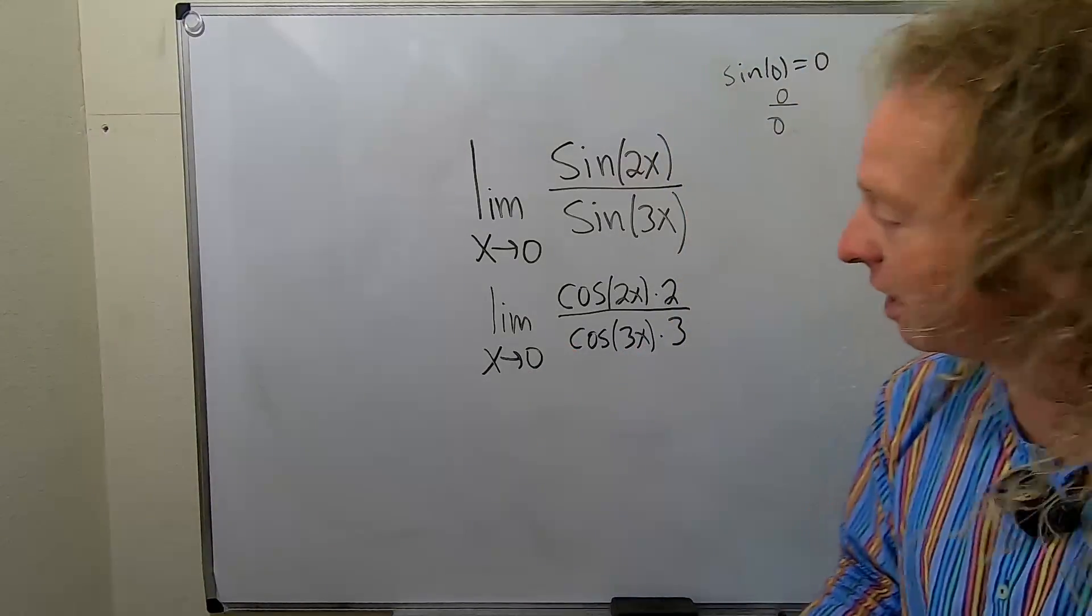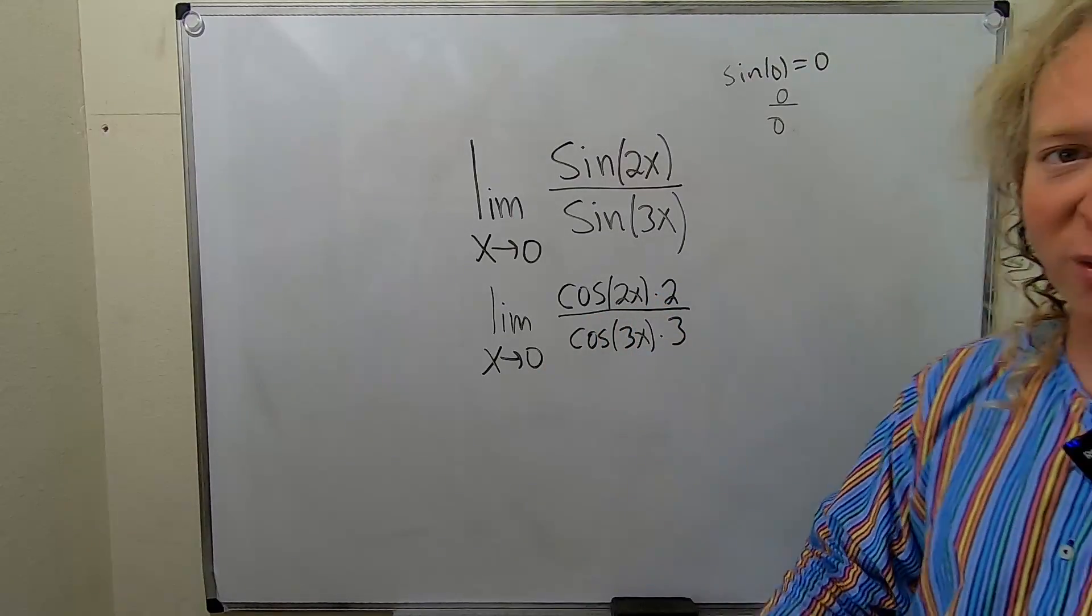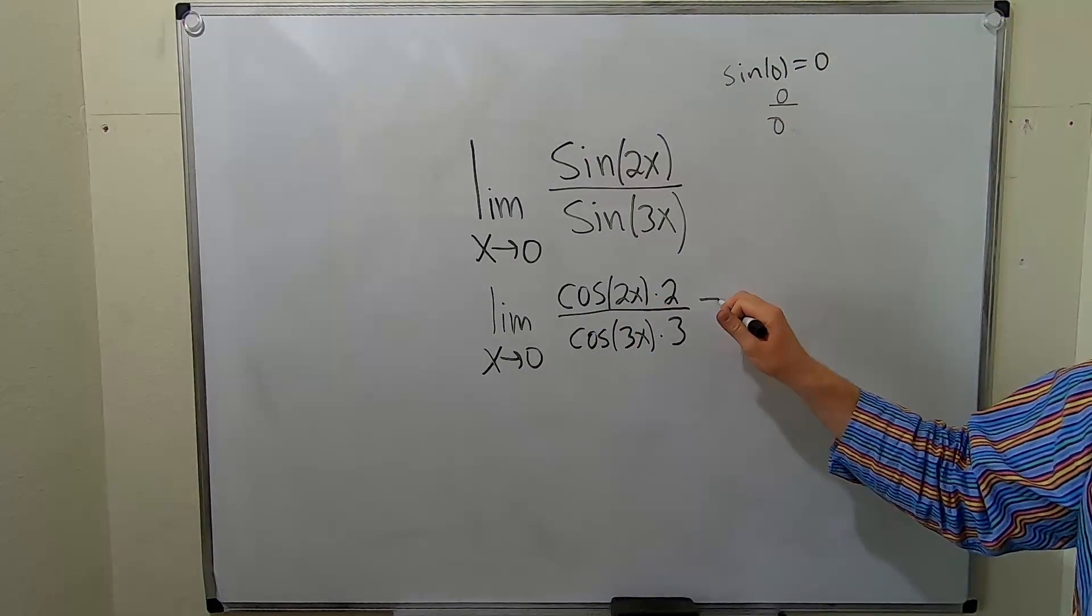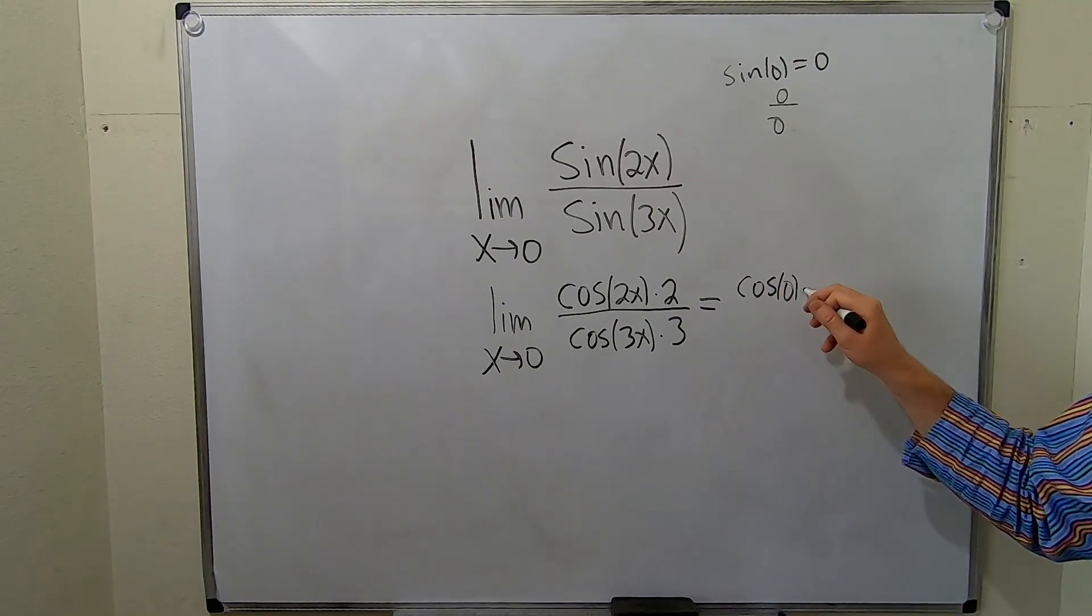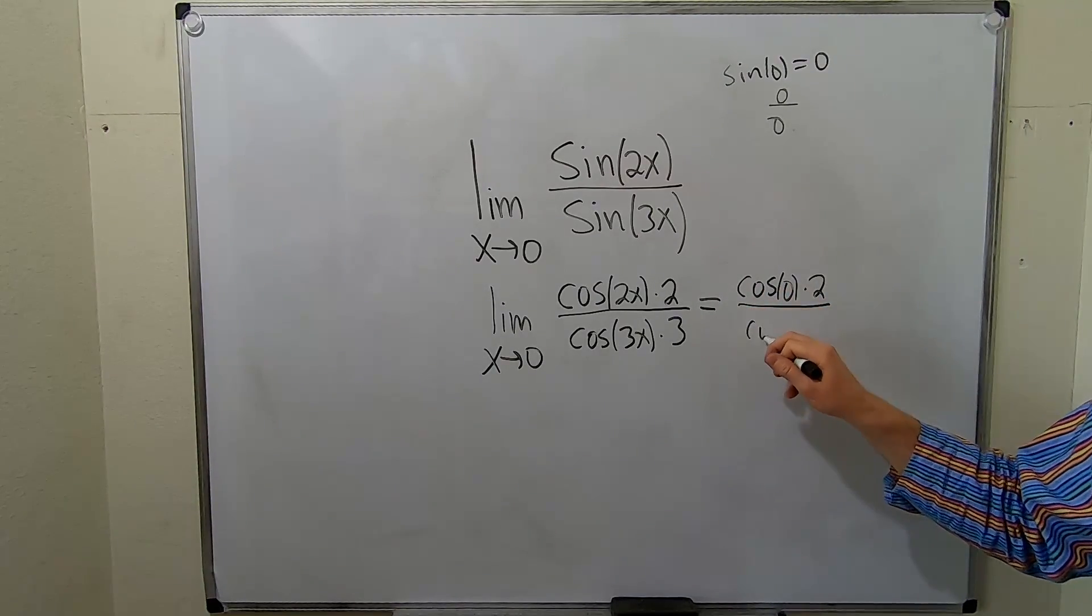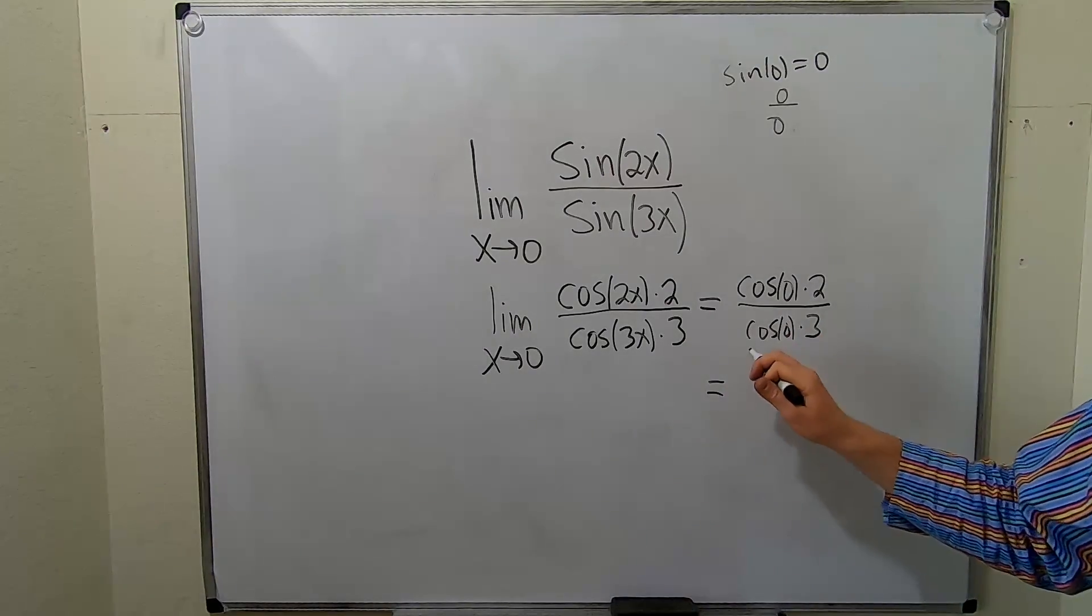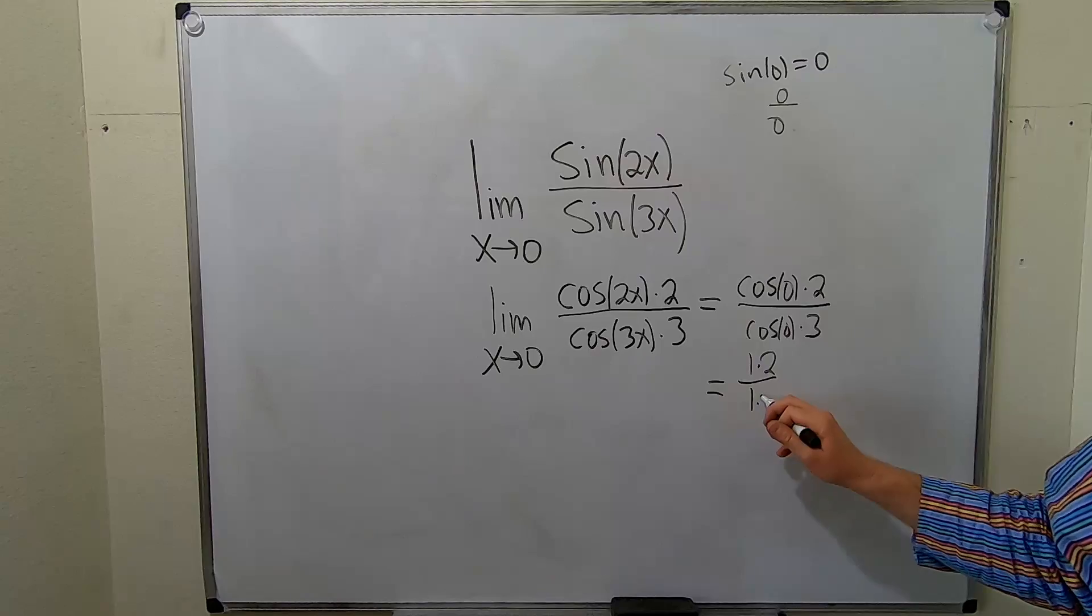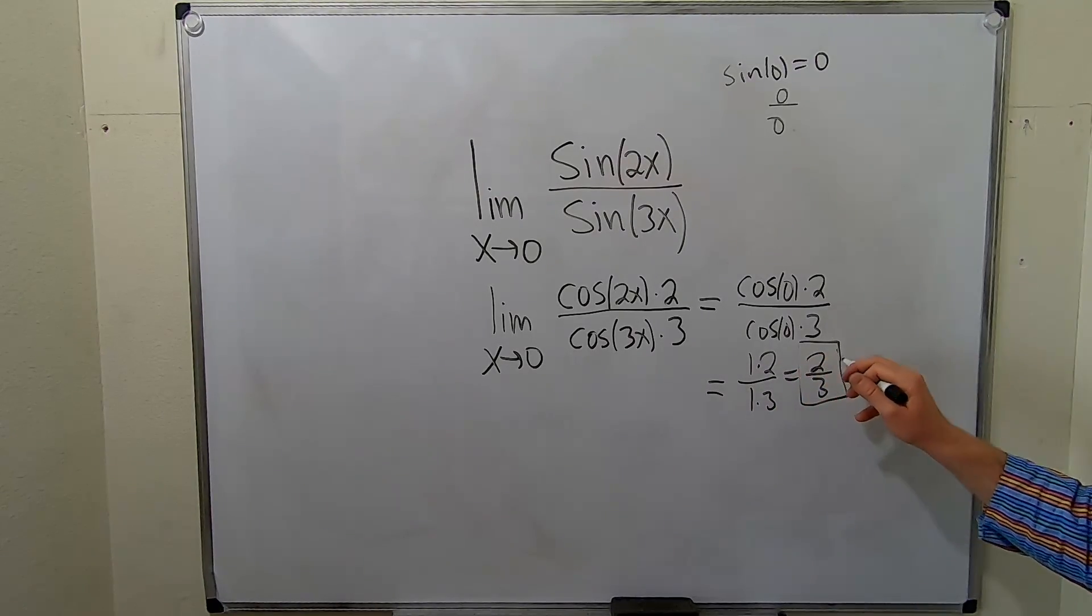This works out so nice because now you can just plug in the 0 because cosine of 0 is 1. So, this is going to be cosine of 0 times 2 over cosine of 0 times 3. We know cosine of 0 is 1, so we get 1 times 2 over 1 times 3, which is equal to 2/3. And that would be the final answer.